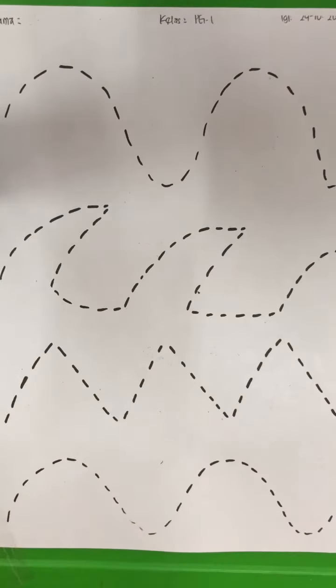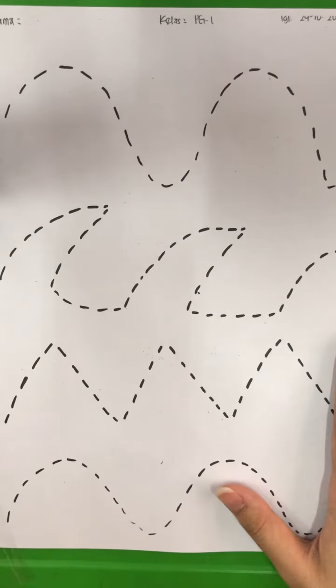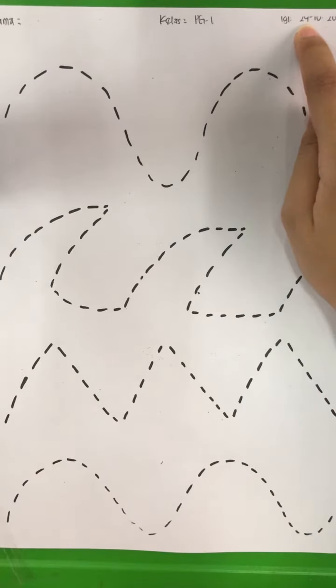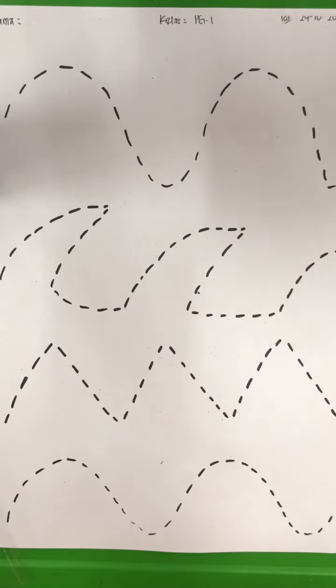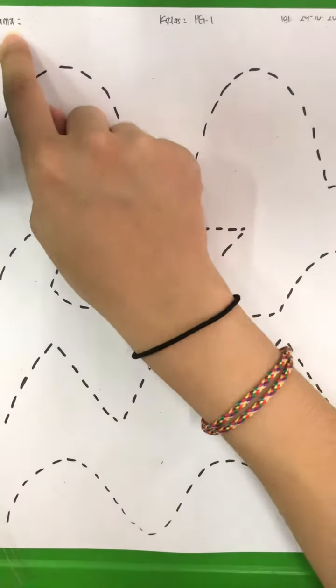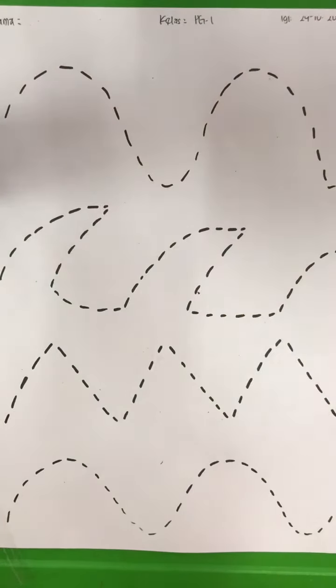Hi boys and girls, today we are going to do a tracing exercise. First of all, teacher wants you to prepare the paper with the date of 29th, and then also your crayon. Now teacher wants you to write down your name first, you can ask mommy's help for this.